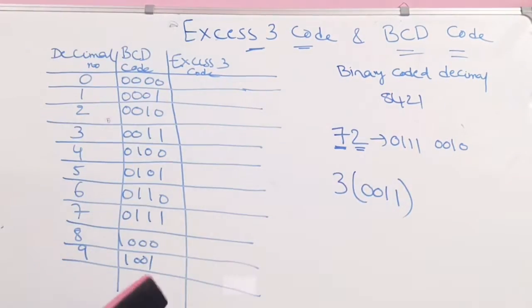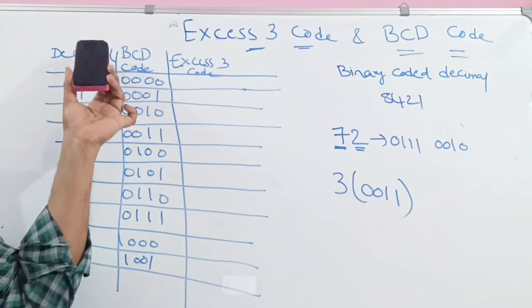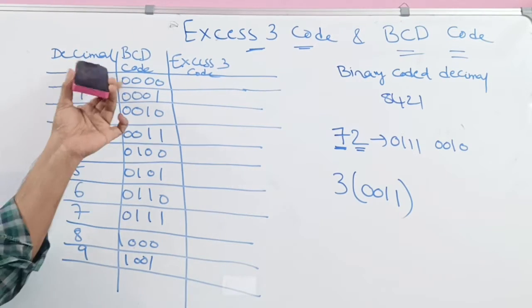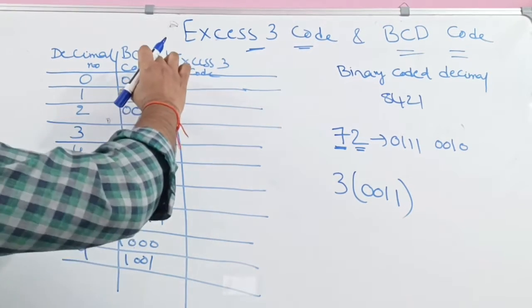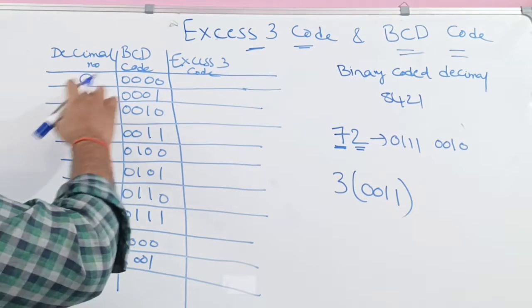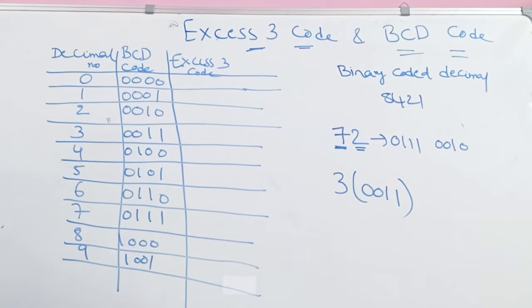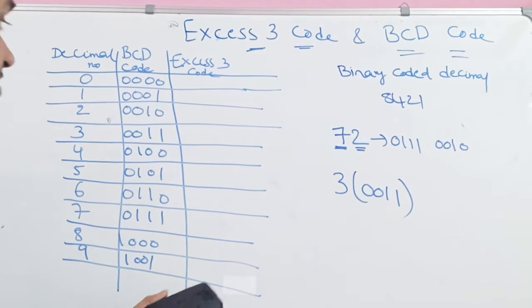Let us see this table. We have 3 columns. The first column represents decimal numbers from 0 to 9, and the second column shows the corresponding binary numbers in BCD notation using 8421 notation. So 0 is 0000, 1 is 0001, 2 is 0010, 5 is 0101, 8 is 1000, and 9 is 1001.